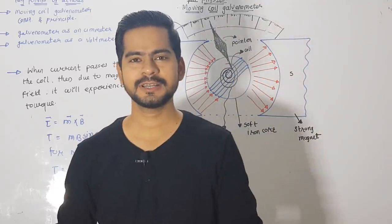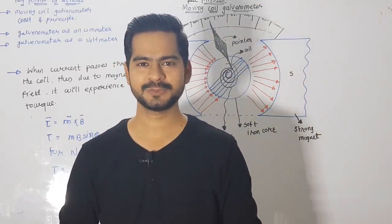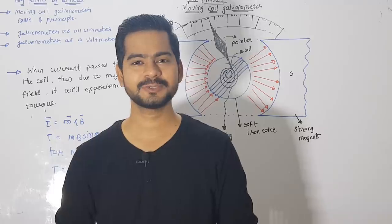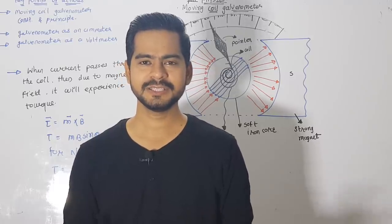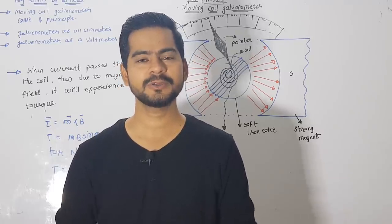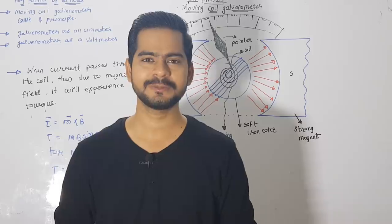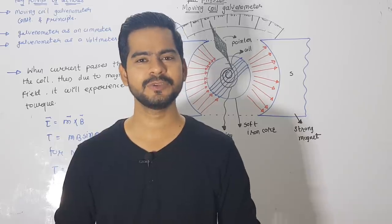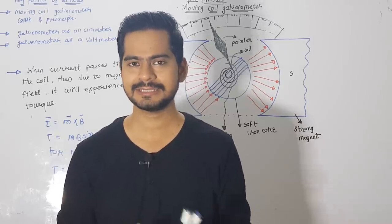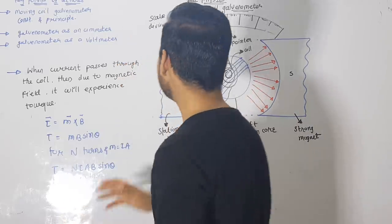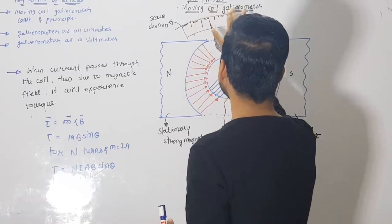Hello everyone, welcome back to the class of Sachin Sir Physics, the finest way to learn concepts. In this video we're going to talk about the last point of the chapter 'Moving Charge and Magnetism,' and in this class we will deal with the topic of the moving coil galvanometer.